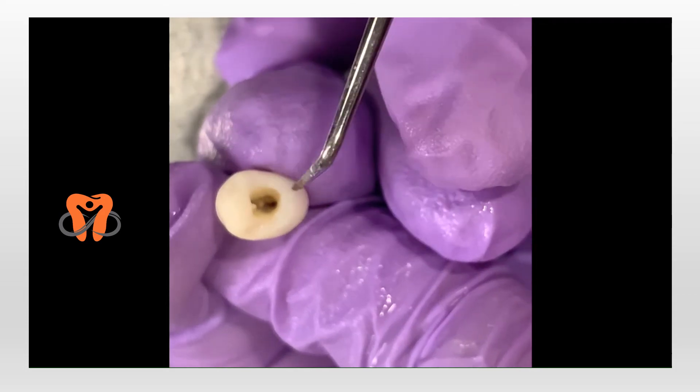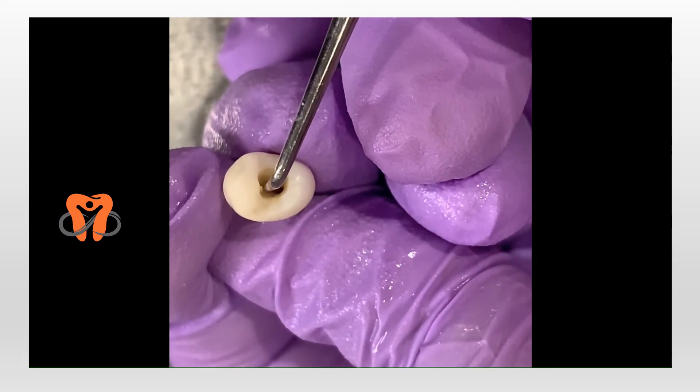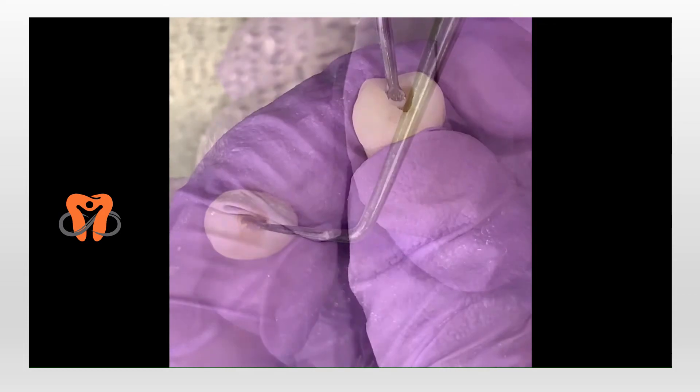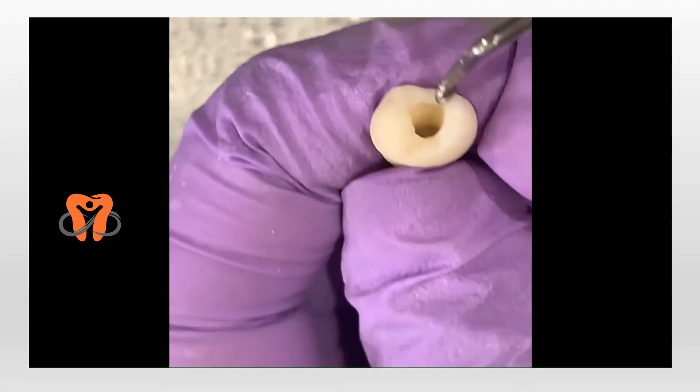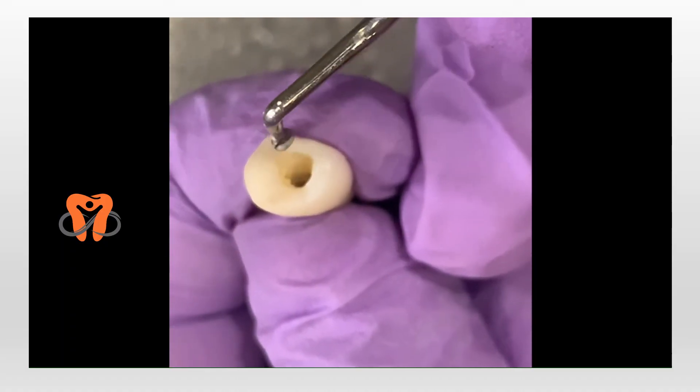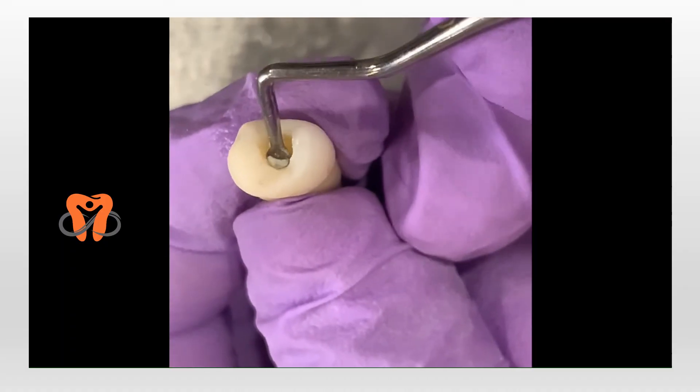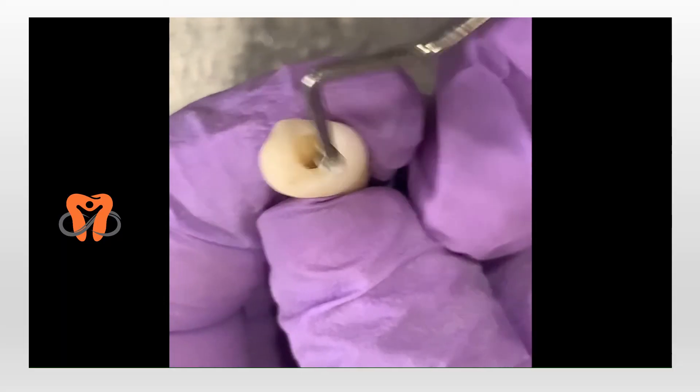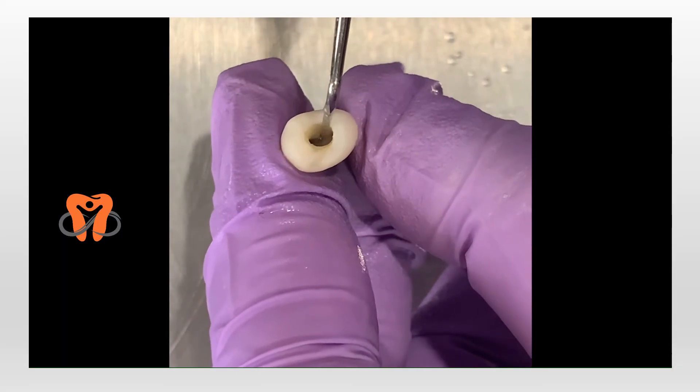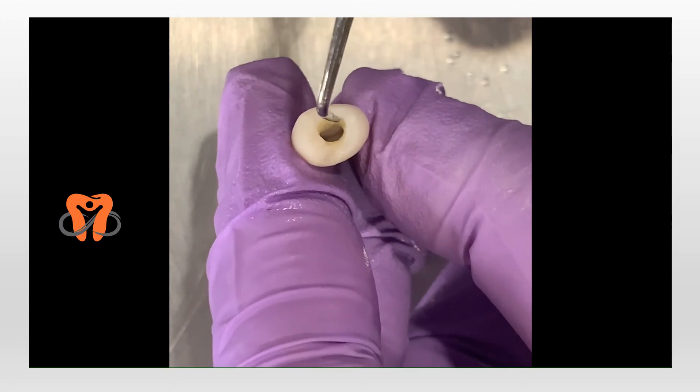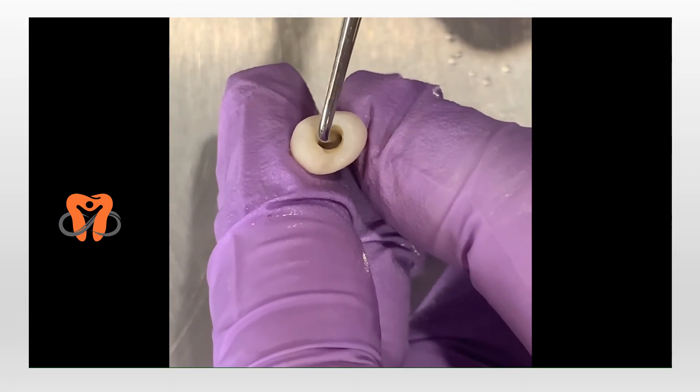Now with help of an endodontic explorer and then an excavator, any debris that is present is removed along with pulp remnants or overhangs of the roof of the pulp chamber so that we can achieve direct access into the pulp chamber. You can see this is the buccal orifice and this is the lingual orifice.